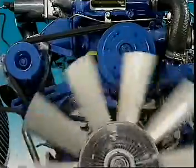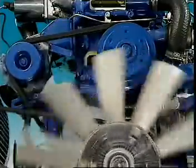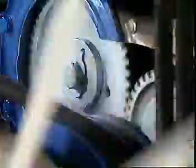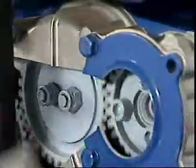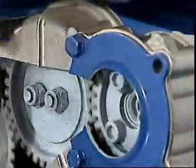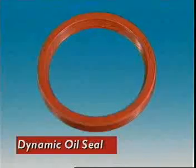Gaskets around a rotating part would quickly wear out and leak. To seal these parts, oil seals are needed. Many different kinds have been developed. The most widely used is the lip type dynamic oil seal.